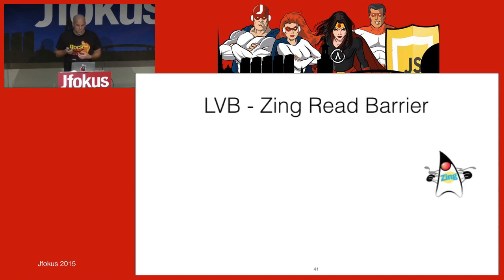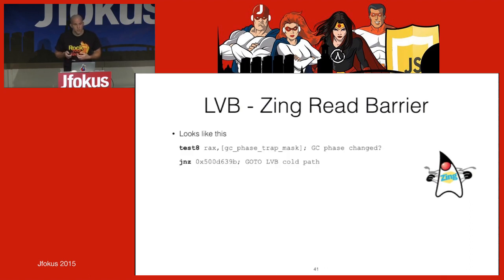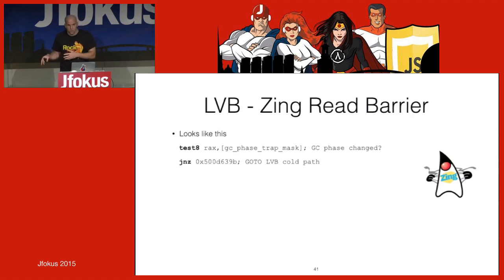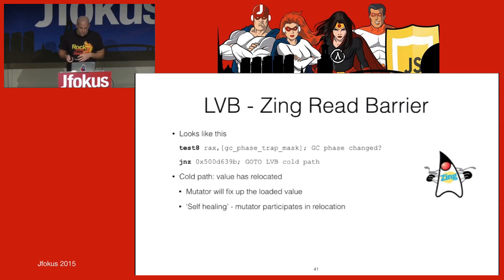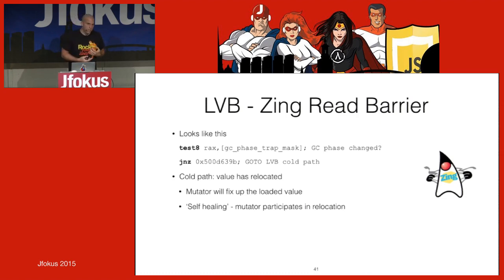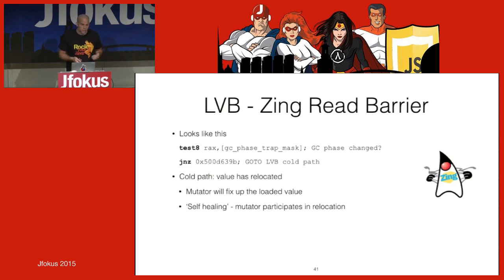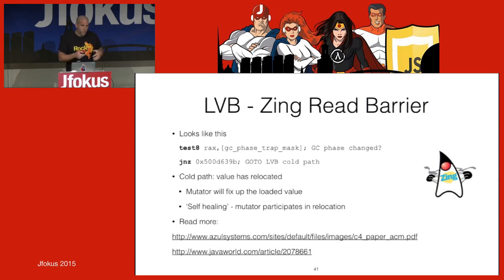In Zing, I pay a little extra because I have to go through the read barrier before copying or comparing objects. The reason is concurrent relocation — you pay for the good bits. Mostly these slow paths don't occur; it's a fairly infrequent event. You can read more about the C4 concurrent GC algorithm in the published paper.